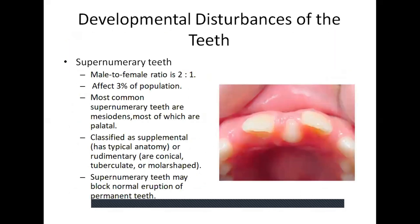Moving on to developmental disturbances of the teeth. First is supernumerary teeth. The male-to-female ratio is approximately 2 to 1, affecting mostly 3% of the population. The most common supernumerary tooth is the mesiodense, mostly palatine. It is classified as supplemental or rudimentary and can be conical, tuberculate, or molar-shaped. Supernumerary teeth may block normal eruption, and in such cases early removal should be considered to prevent impaction of adjacent teeth.